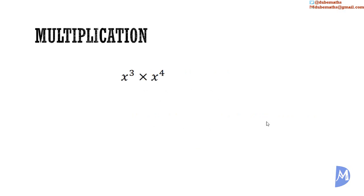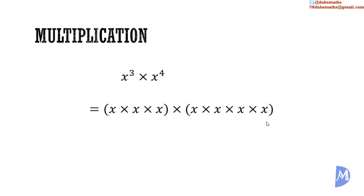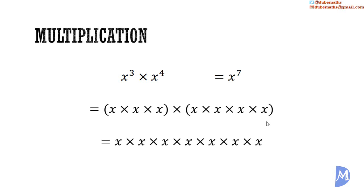With multiplication, consider x to the 3rd power multiplied by x to the 4th power. That is x multiplied by x multiplied by x, being multiplied by x being multiplied 4 times, which gives x being multiplied 7 times — so that's x to the 7th power. Notice that 3 plus 4 is equal to 7, so x to the 3rd power multiplied by x to the 4th power equals x to the 3 plus 4 power, which is x to the 7th power.